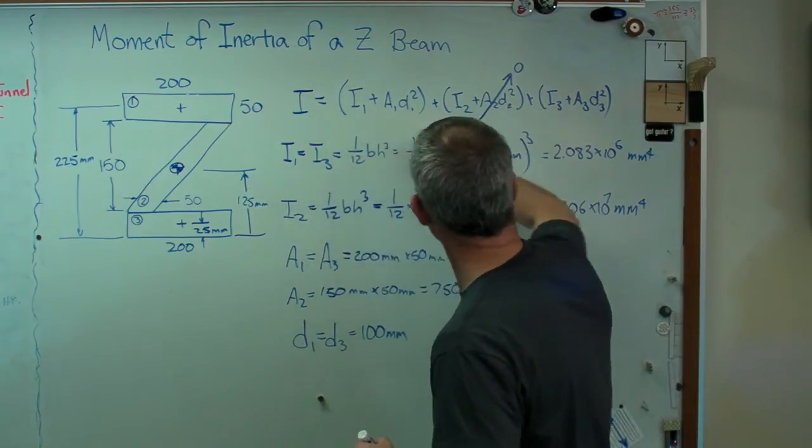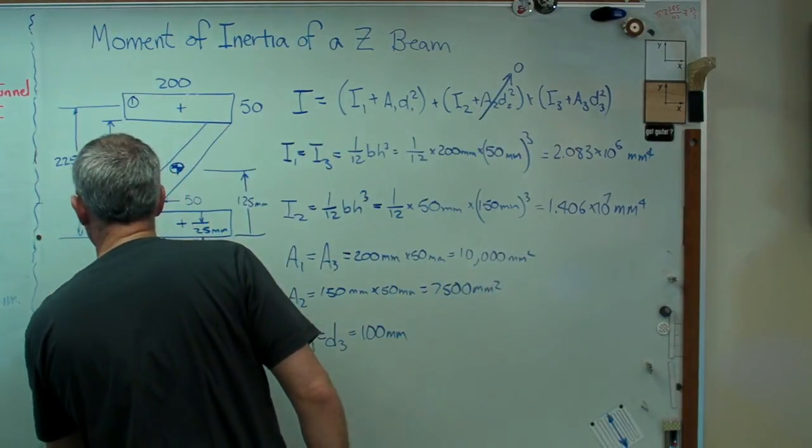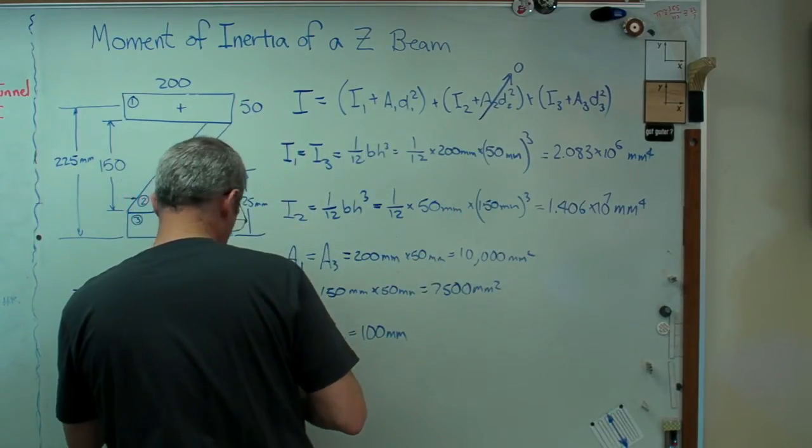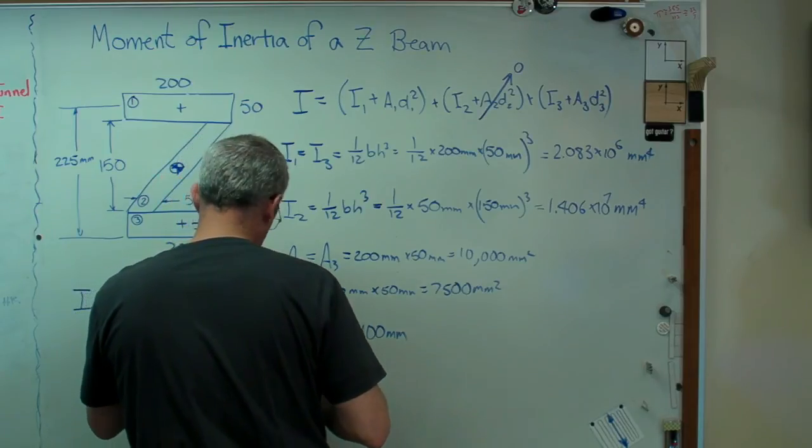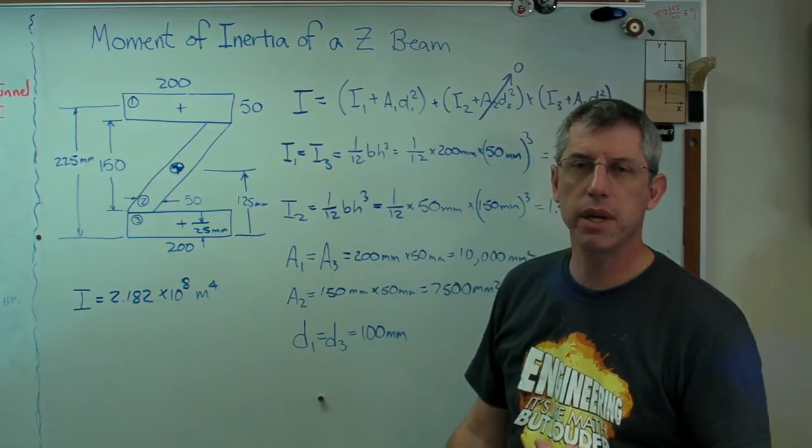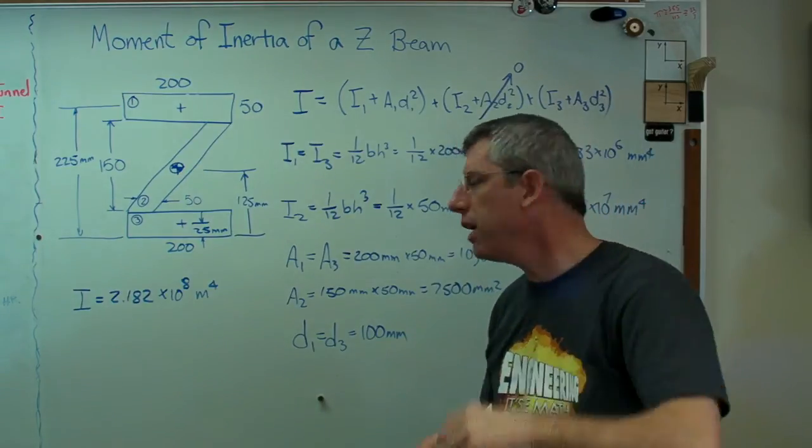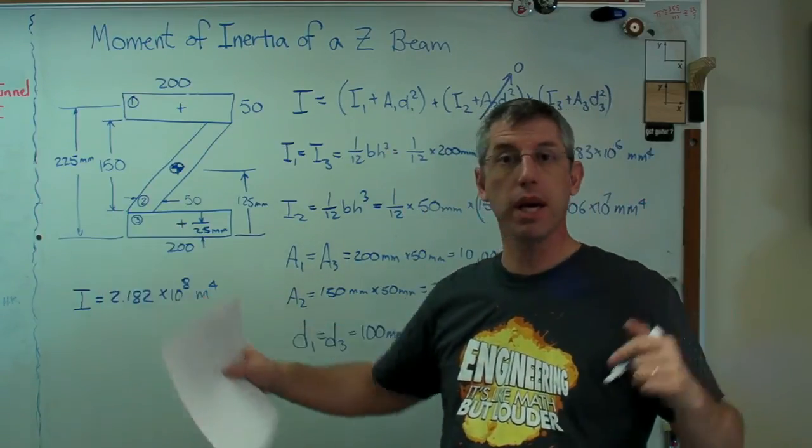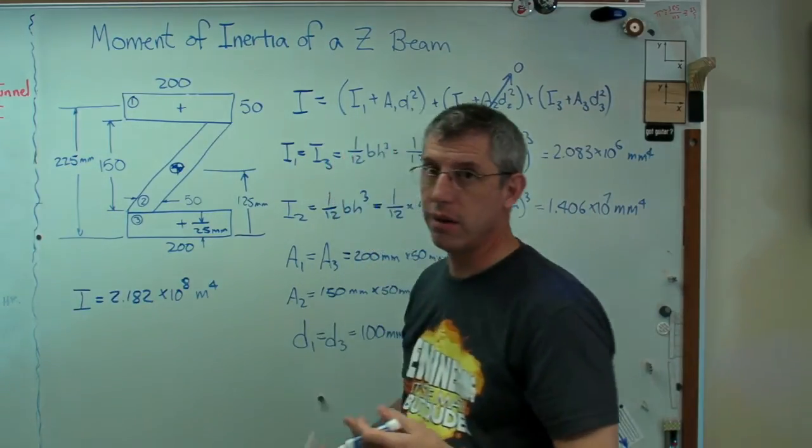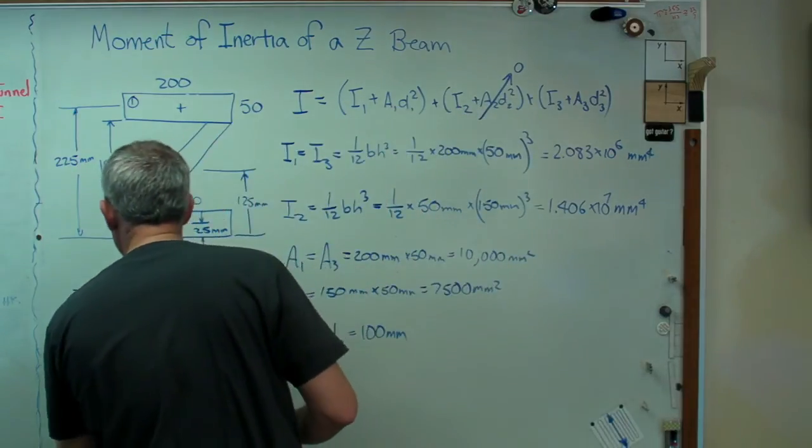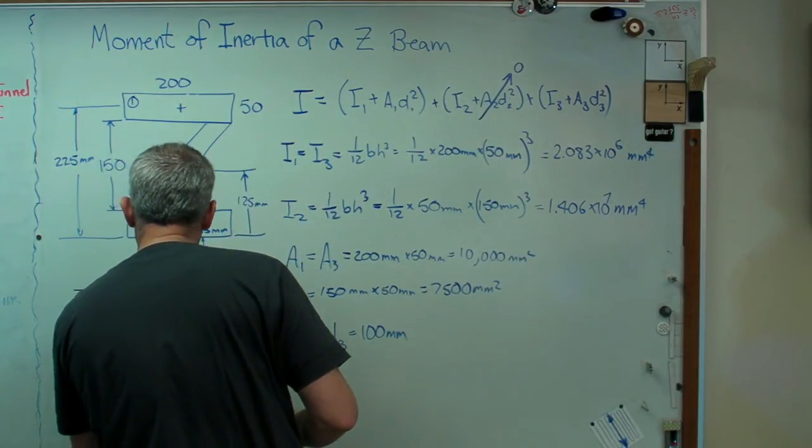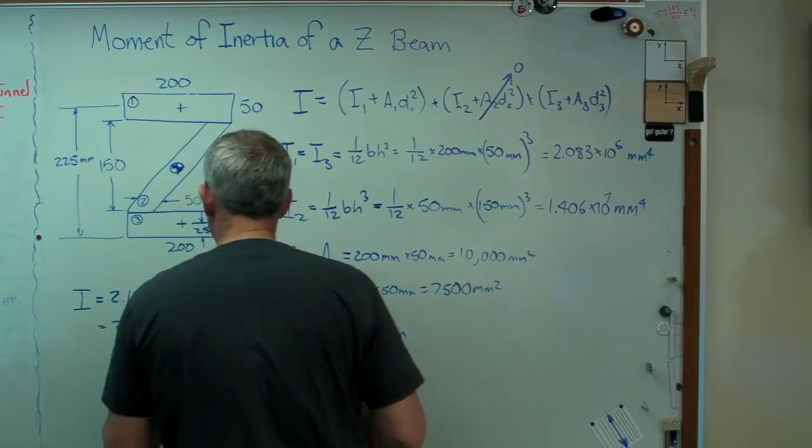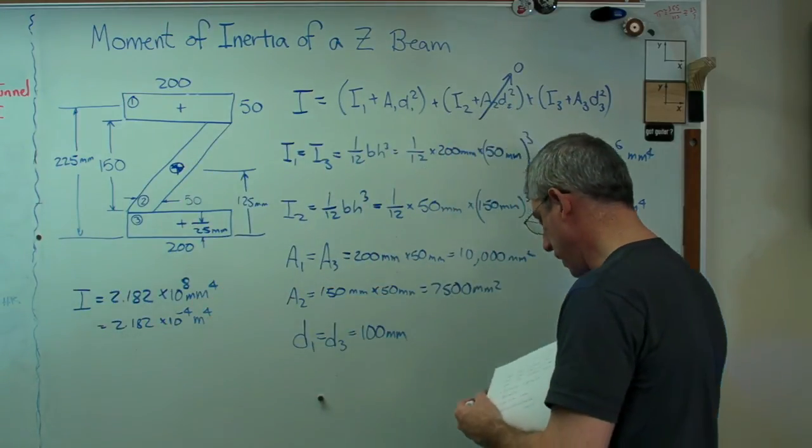So, if you plug all these numbers into there, what you're going to get out the other side is I equals 2.182 times 10 to the 8 millimeters to the 4th. That's a really big number. Well, it's a really big number because a millimeter is about that big, and we're talking about taking millimeters to the 4th. The other way to do it is to express it in meters. Well, a meter is about that big, so this is going to be a really small number. It's going to be that divided by 10 to the 3rd four times. And so, that's going to turn out to be 2.182 times 10 to the minus 4 meters to the 4th. We've got that correct now. So, there you go.